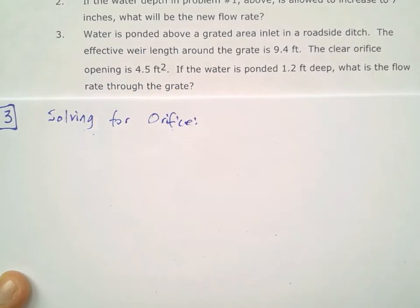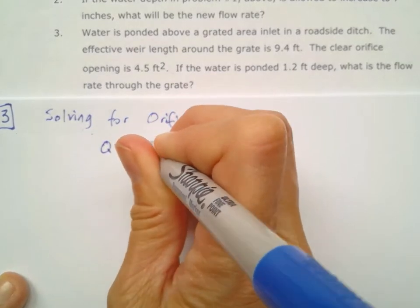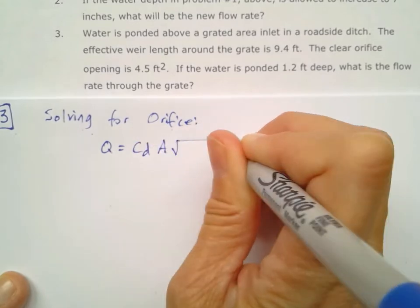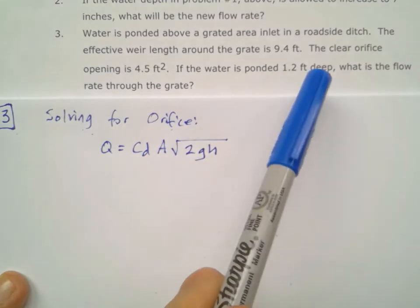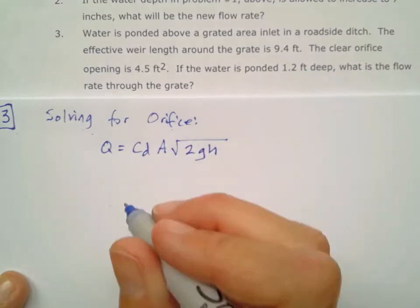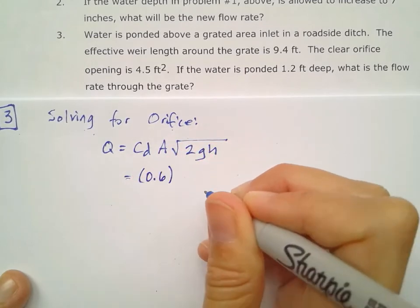So for my orifice, I'll go ahead and use my orifice equation. Q is equal to my coefficient of discharge times my area times the square root of 2G times that height from the centroid to the top of the water. I'm told that 1.2 feet deep, so I'm going to use that for my H here. So my coefficient of discharge not told, so I'll use the default of 0.6.